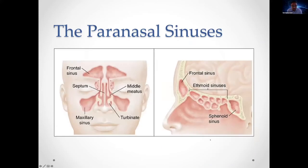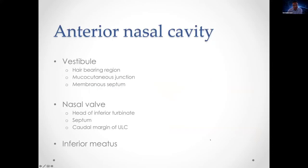You'll know there are five pairs of paranasal sinuses: the maxillary, frontal, anterior and posterior ethmoid sinuses, and the sphenoid sinus. Starting with the anterior nasal cavity — the nasal vestibule is right at the very front, a hair-bearing region where the epithelium transitions from skin to mucosa, and it extends to the membranous part of the septum.